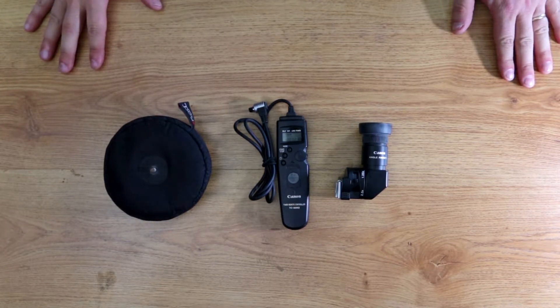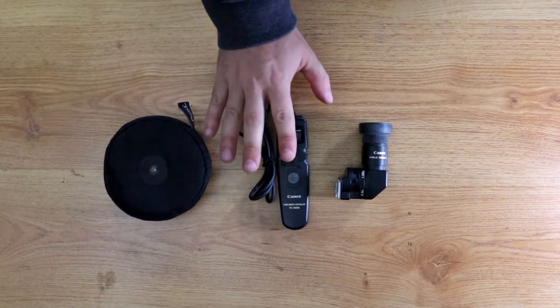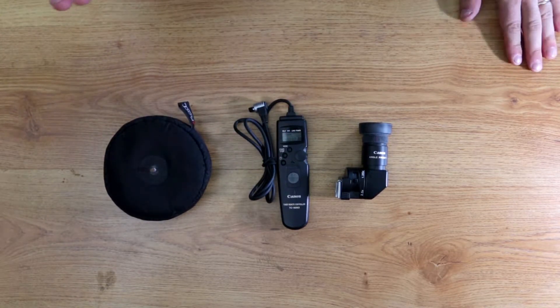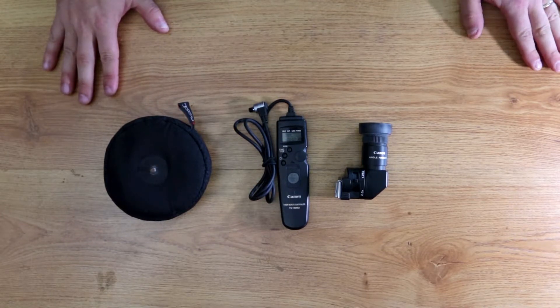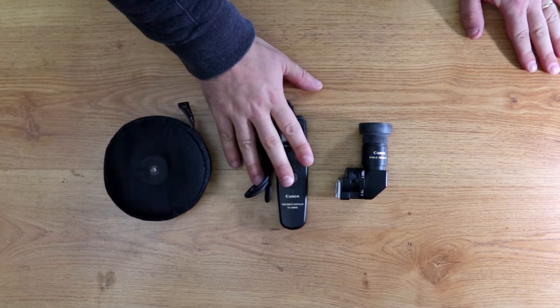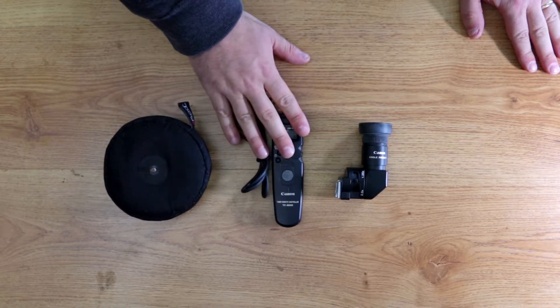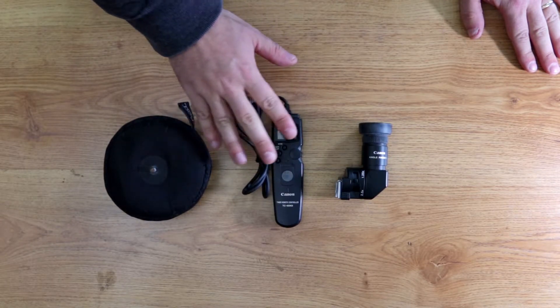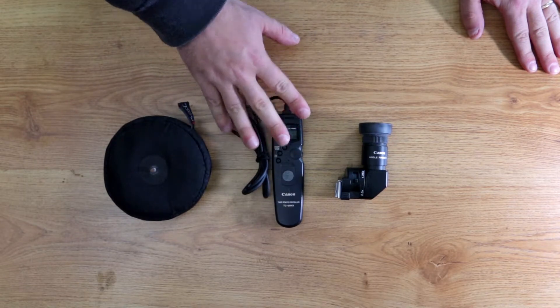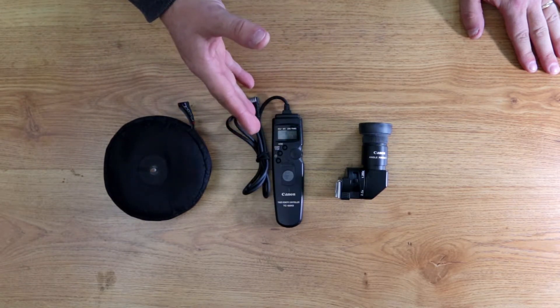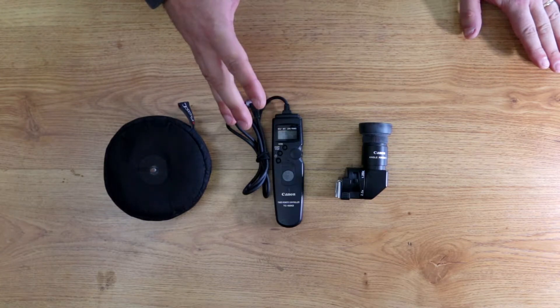The next thing is a release cable. Goes on the same theory. Any shake of that camera is going to show up and blur your images. So a good release cable that you can remote trigger your shutter without actually shaking or moving the camera. That's going to be most helpful if you have everything set up on a tripod, your camera is stationary, and your subject is stationary.